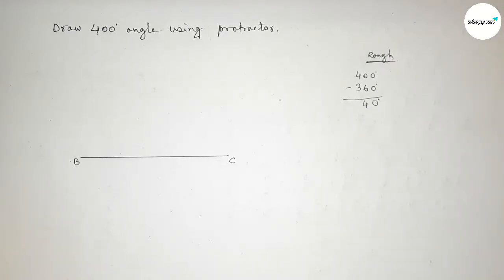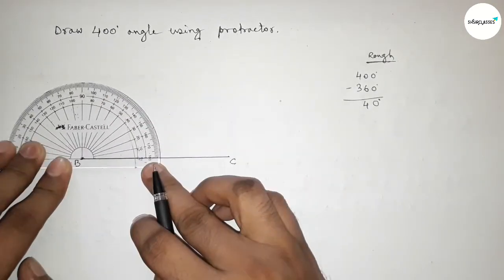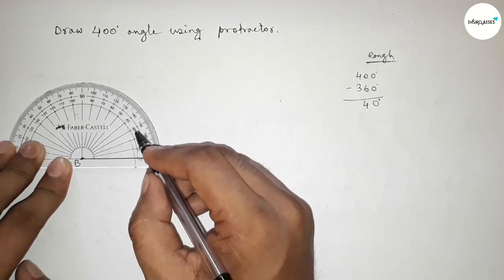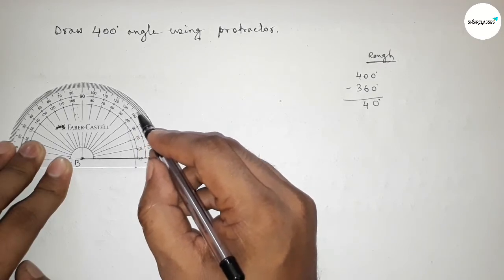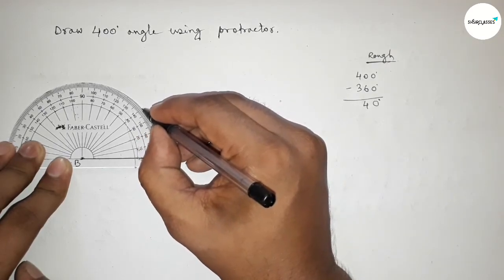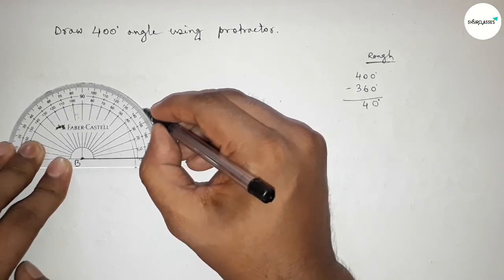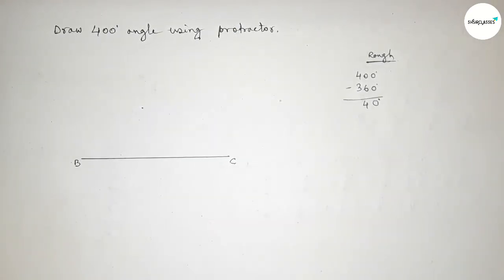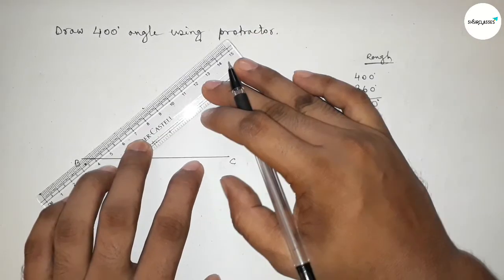By this way, so now counting angle: zero, 10, 20, 30, and this is 40 degrees. So this line represents a 40 degree angle. So marking here 40 degrees. Next, joining this, joining this line and taking here point A.